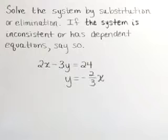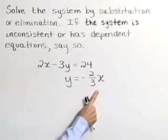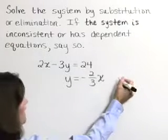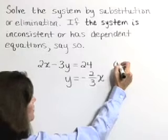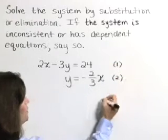Here we have the system 2x minus 3y is equal to 24, and y is equal to negative 2 thirds x. I'm going to start by identifying these as equations number 1 and 2.